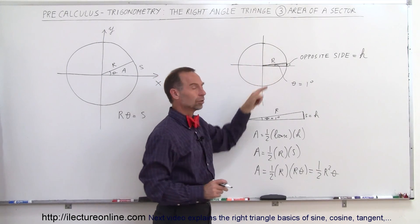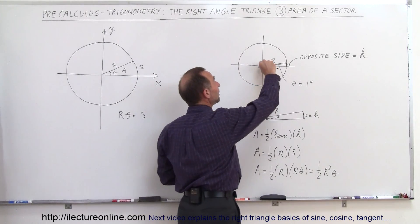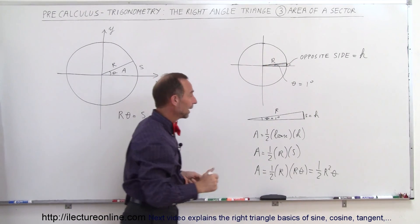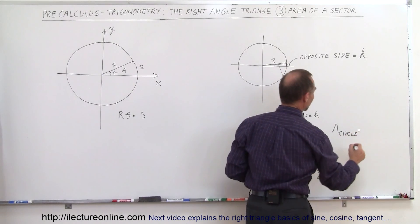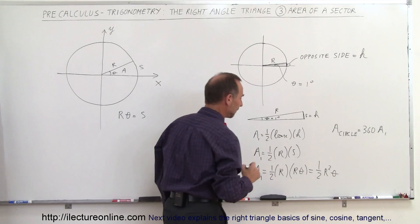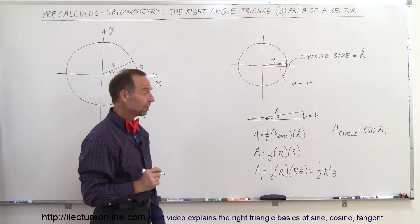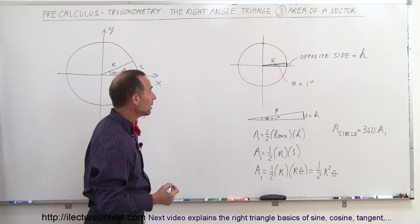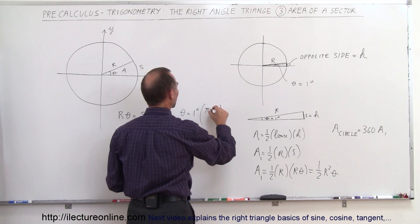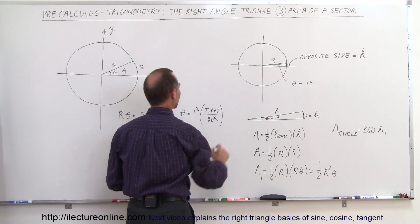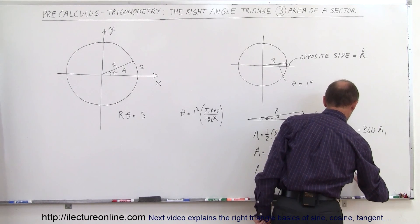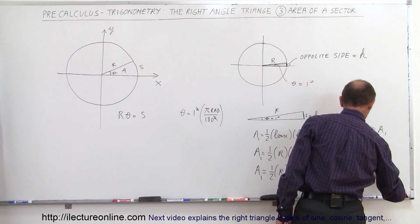What would the area of the entire circle be? That would be 360 times as much, because if we make 360 of those small slivers of triangles, it covers the entire circle. So the area of the circle equals 360 times the area of a single sliver. The angle is one degree, but we must convert that to radians: one degree times pi over 180 degrees gives us pi over 180 radians. So the area of a single sliver is one-half r squared times pi over 180.